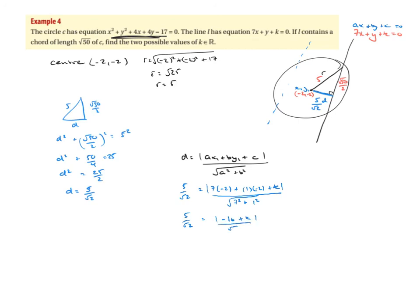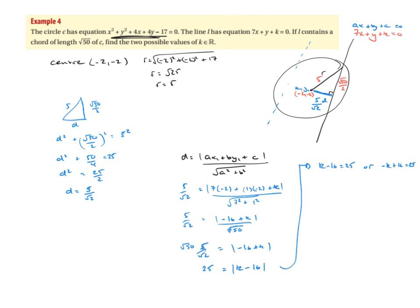Since √50/√2 = √25 = 5, multiplying both sides by √50 gives 5 × 5 = 25 = |k - 16|. So k - 16 = 25, giving k = 41, or -(k - 16) = 25, giving -k + 16 = 25, so k = -9. The two possible values are k = 41 or k = -9.